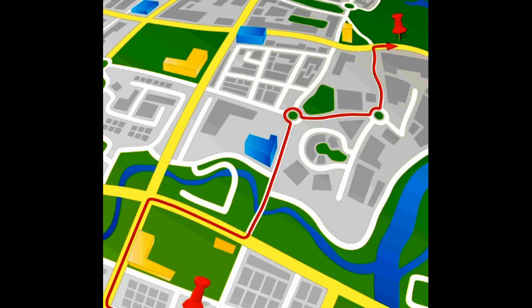Without feature data, a coordinate location is of little use. So, what are the different features which can be mapped in a GIS system? There are three types of features which can be mapped: points, lines, and areas.